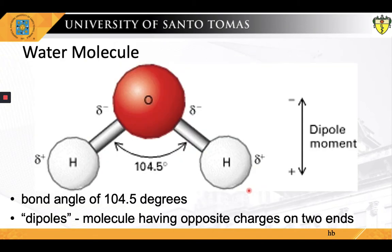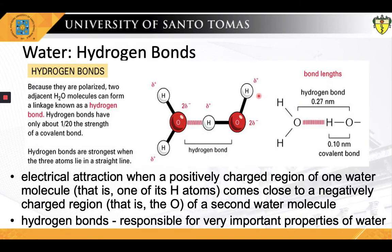In a water molecule, both hydrogen atoms are on the same side of the oxygen atom. As a result, the side of the molecule with the two hydrogen atoms has a slight net positive charge, whereas the other side — the side of the oxygen atom — has a slight net negative charge. Because of this separation of positive and negative charges, the entire molecule has a net dipole moment. Because they are polarized, two adjacent water molecules can form a linkage known as a hydrogen bond.